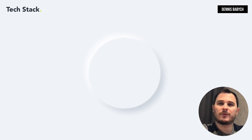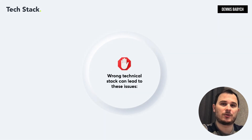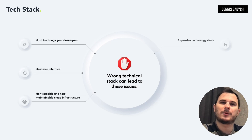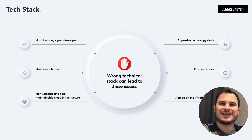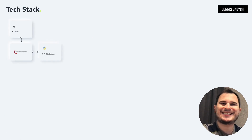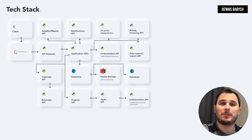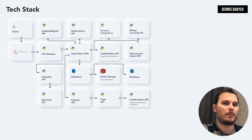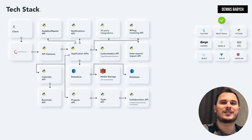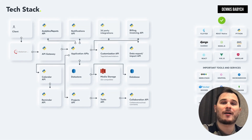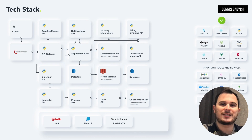Let's delve into the tech stack — one of the most critical aspects when creating project management software. Choosing the right tech stack is vital to avoid challenges such as slow user interfaces, non-scalable and non-maintainable cloud infrastructure, high costs, payment and subscription issues, and the risk of your app going offline during traffic spikes. If you're planning to create project management software, select the appropriate tech stack that enables rapid development of your MVP. Flutter or React Native are excellent choices for Swift mobile app development. For backend development, Python, Django, Node.js, and Amazon Web Services are perfect options. React, Vue.js, and Angular are ideal for crafting web applications. Leveraging third-party services like Stripe and Braintree for payments processing, Twilio for SMS, and SendGrid for emails can expedite your development timeline.